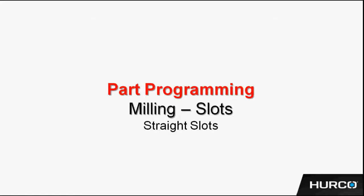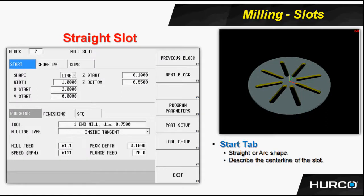In a previous print, we used a mill frame to create a straight slot using corner radiuses. We also could have done that same slot using lines and arcs. Either way is an acceptable way of programming a slot. However, in WinMax there's an easier way.